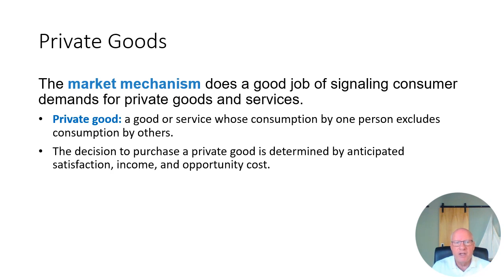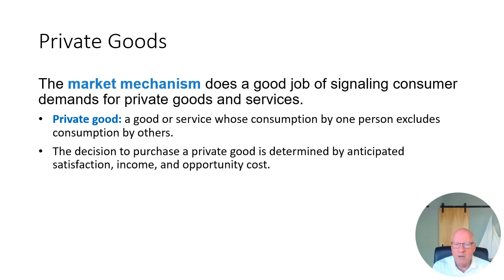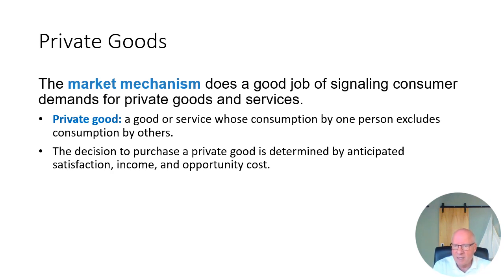The market price lets people know how scarce the item is. Each person makes a decision: do I want a tutor at this price? An electric car? A pair of jeans? Each of us makes our own decision based on tastes, preferences, and income. Given limited income, would I rather have another pair of jeans or hire a tutor? For private goods, the market mechanism works really, really well.